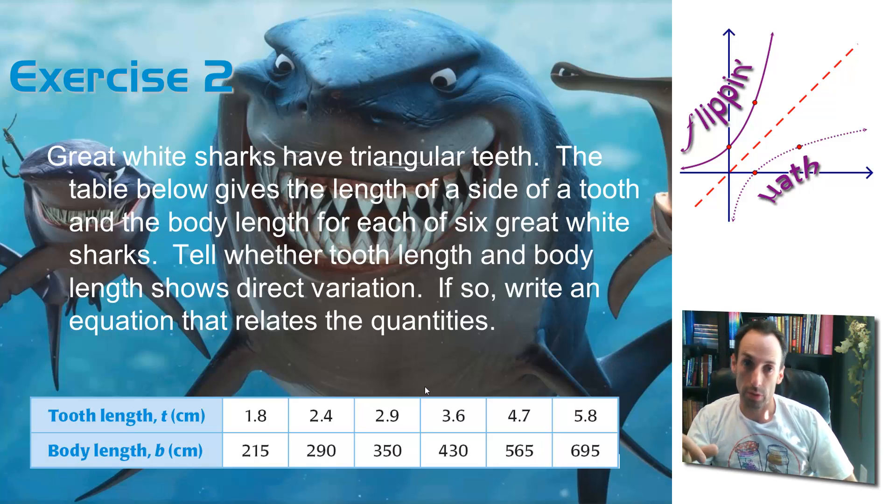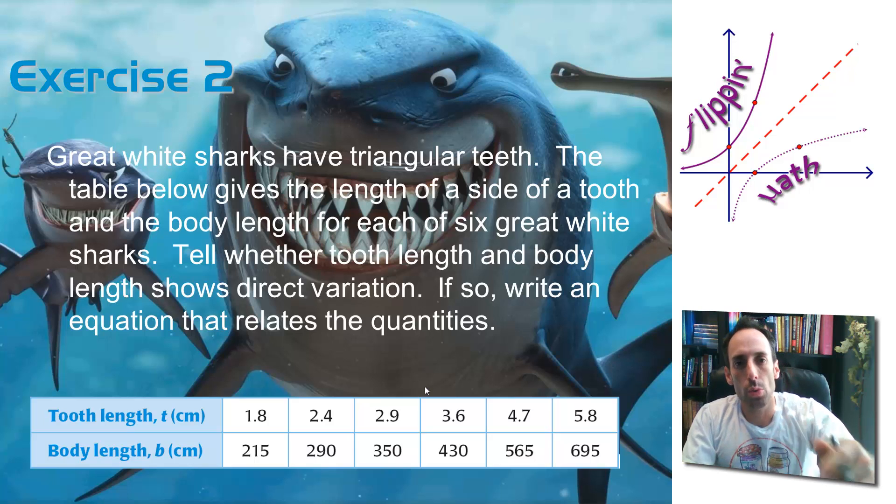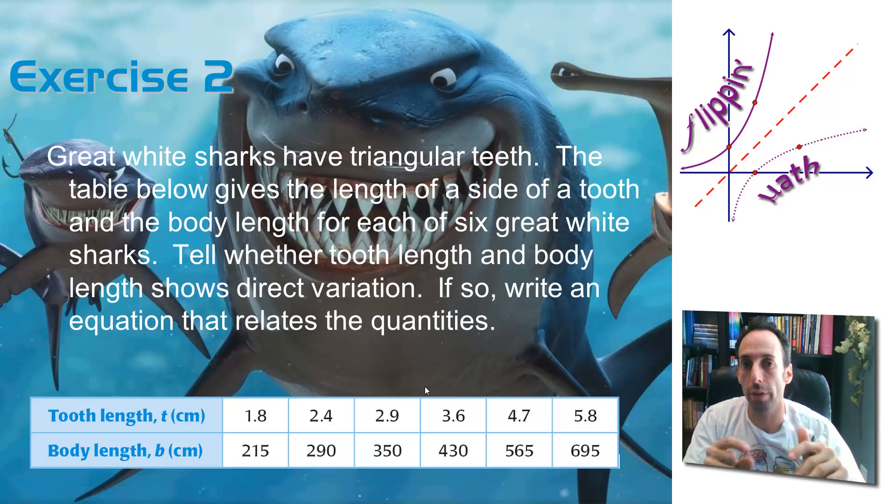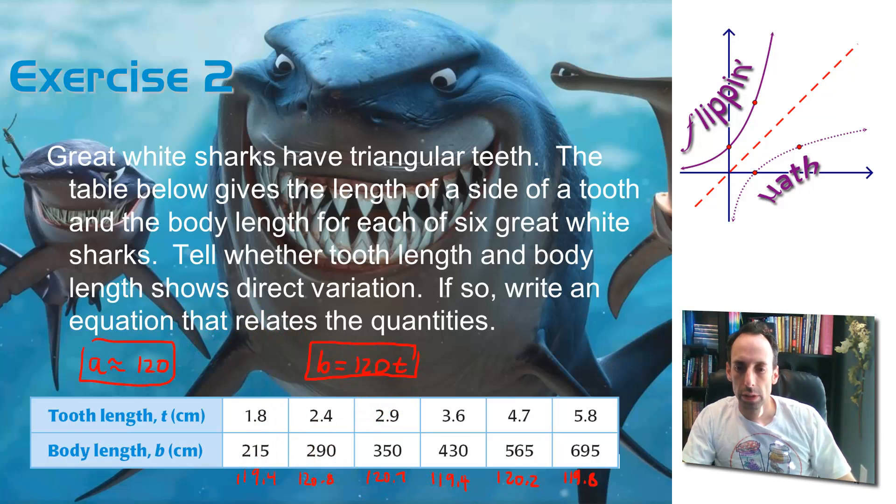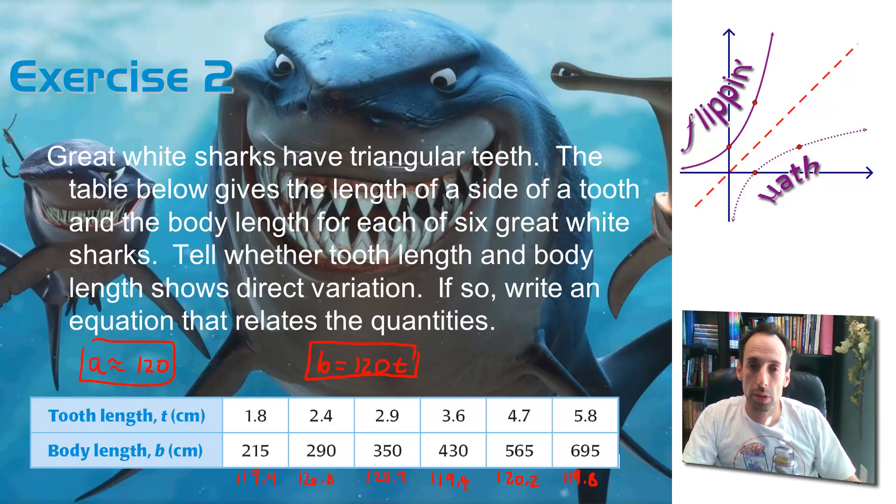Okay. So what I want you to do is go ahead and pause the video and divide these things out. The B, which is our y coordinate, divided by the T, and see if you get roughly the same thing. Now remember, these are actual numbers, actual measurements, and so they may not be exactly on the money, but they should be pretty close if this shows direct variation. So go ahead and pause it and divide your numbers, and let's check them. Okay. So here are the numbers you should have gotten after you divided. Now they're not exactly the same, but they are all approximately the same. They're all approximately 120.